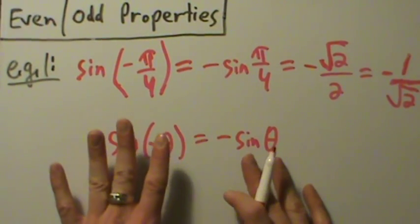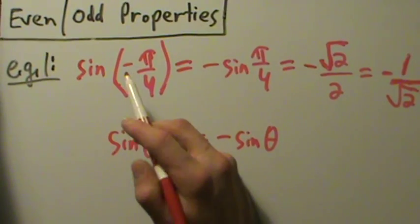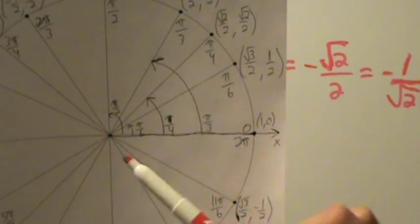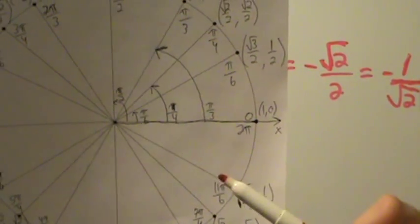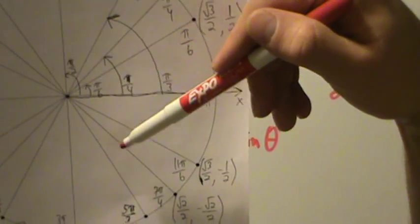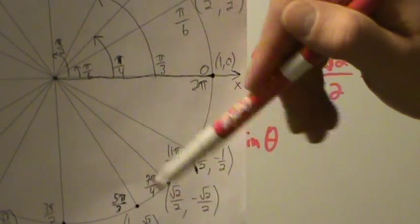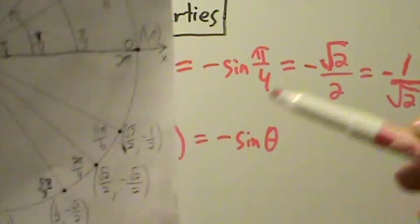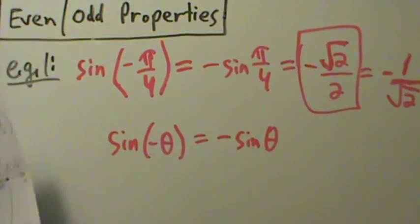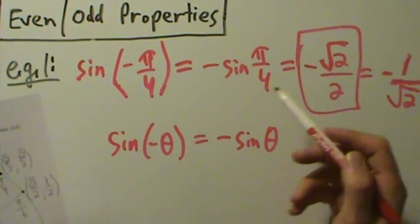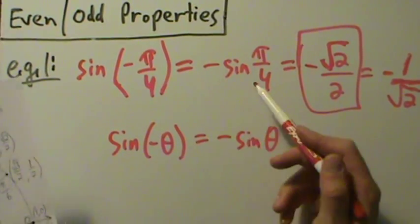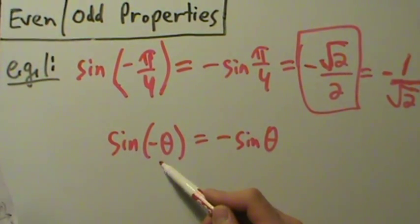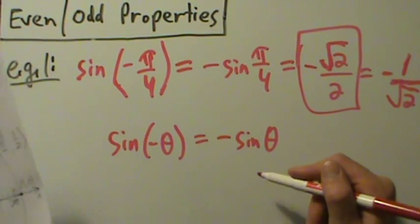Let's look at the unit circle to see what this really means. Negative pi over 4 — if positive pi over 4 is up here, negative pi over 4 is going the same size in the clockwise direction, which puts us at the same place as 7 pi over 4. The sine there — the y-coordinate — is negative root 2 over 2. That's the same answer we got. So it's okay to use these even-odd properties. Sine of negative theta equals negative sine of theta because sine is odd.